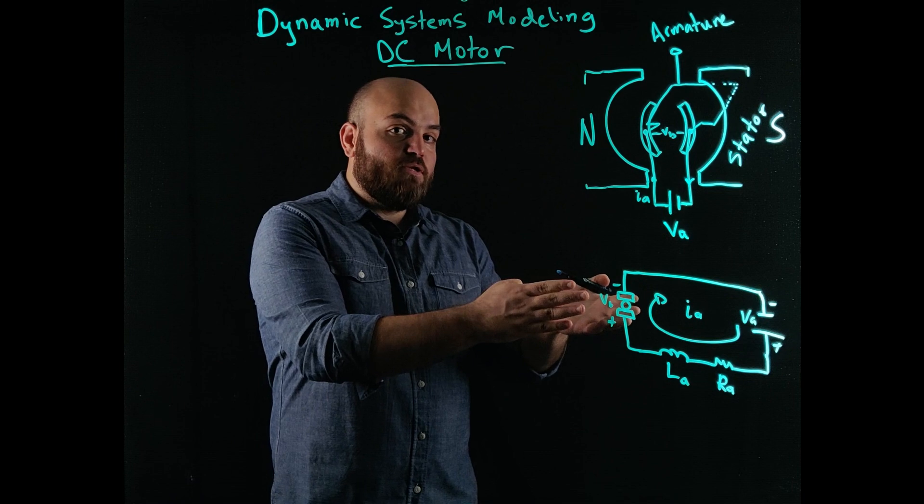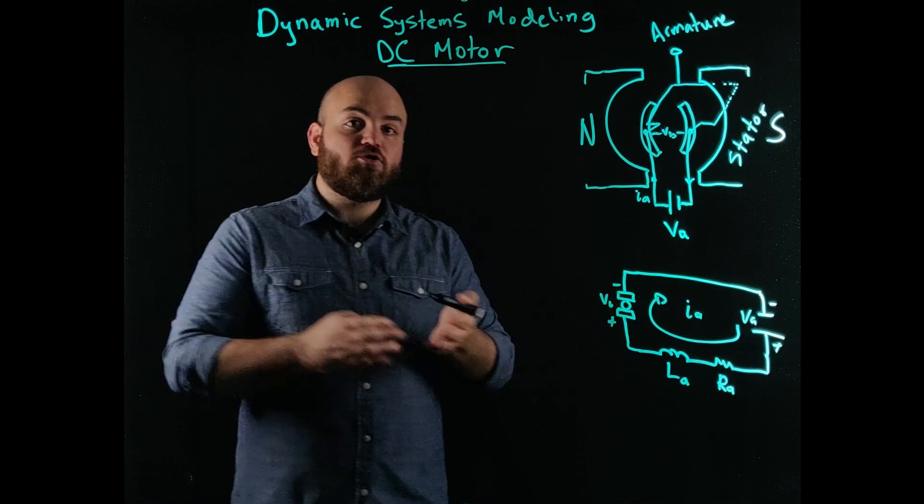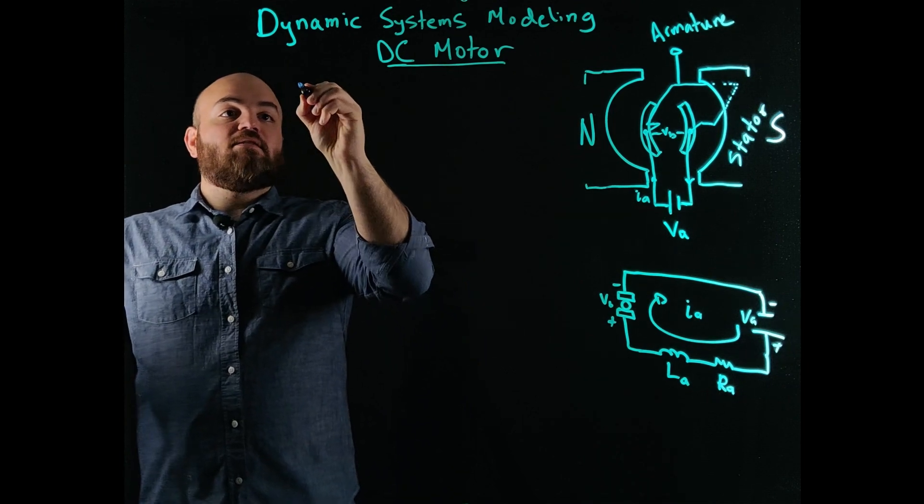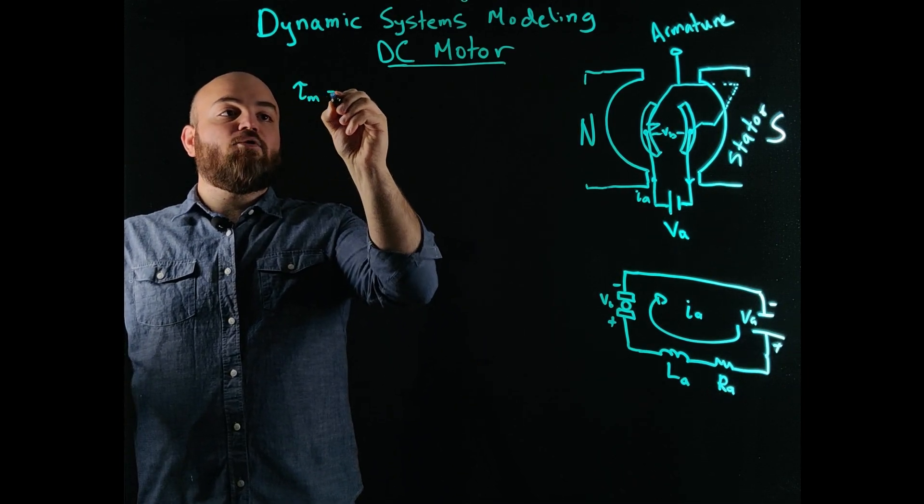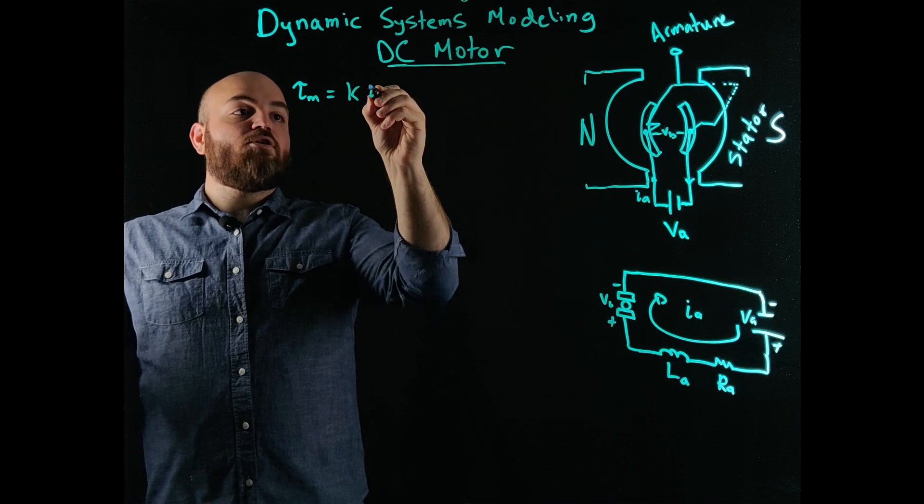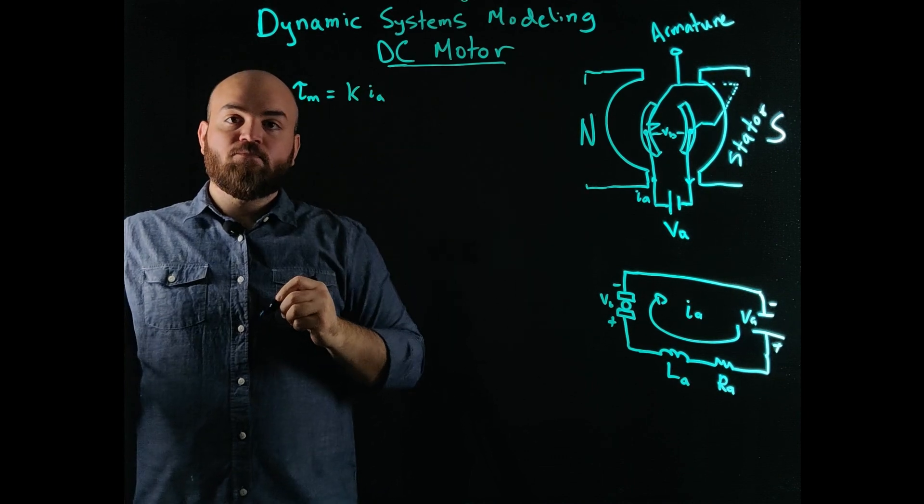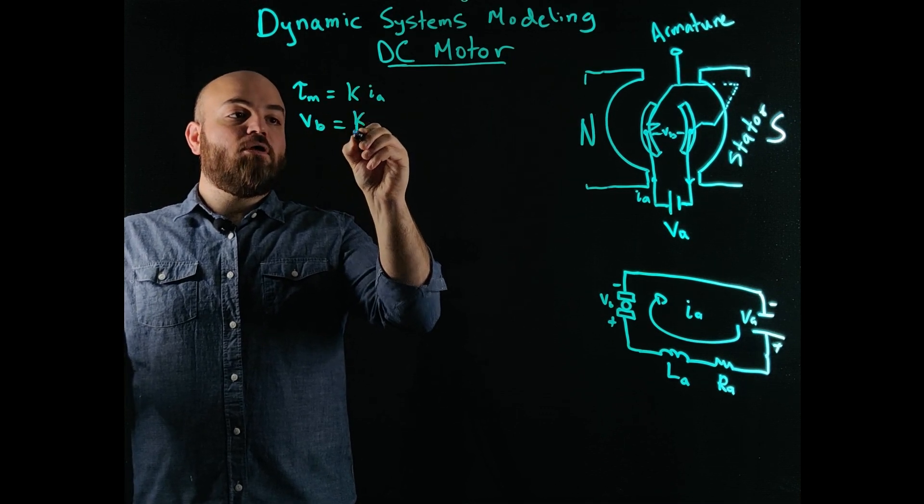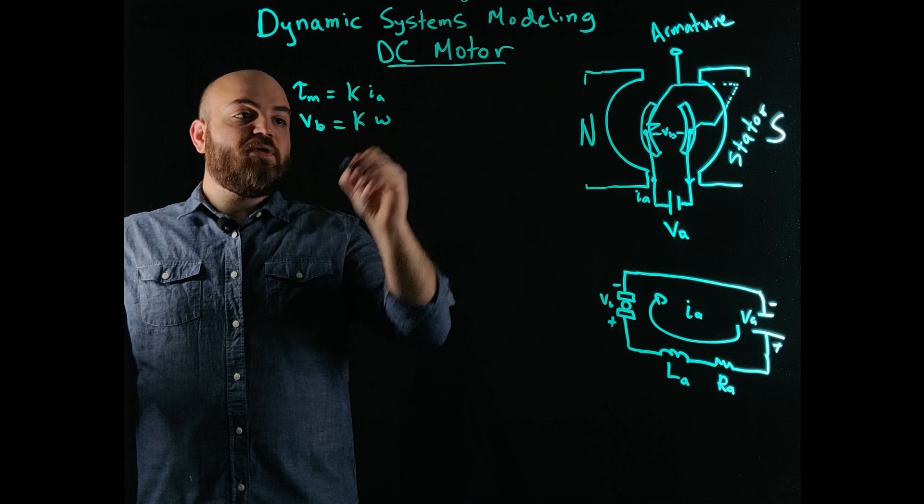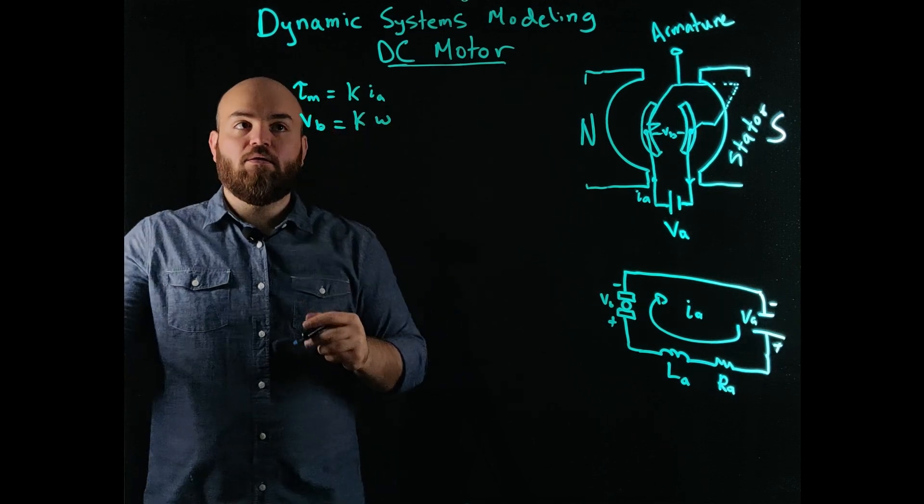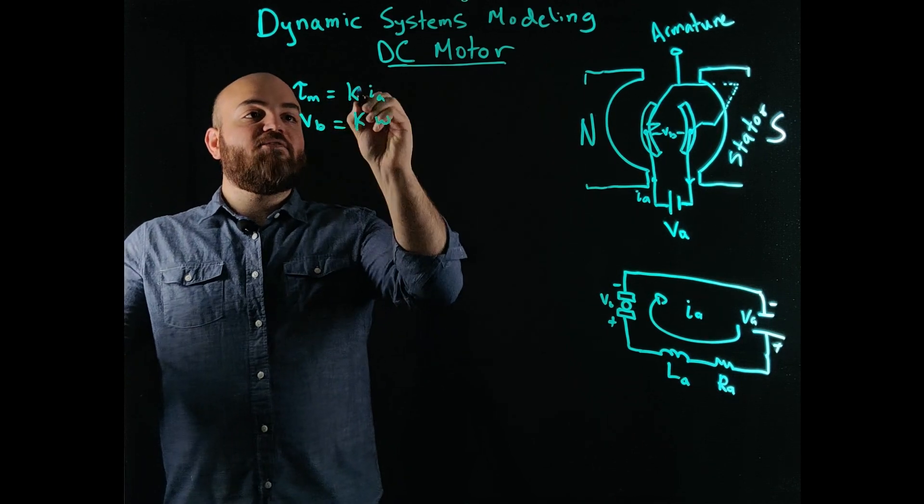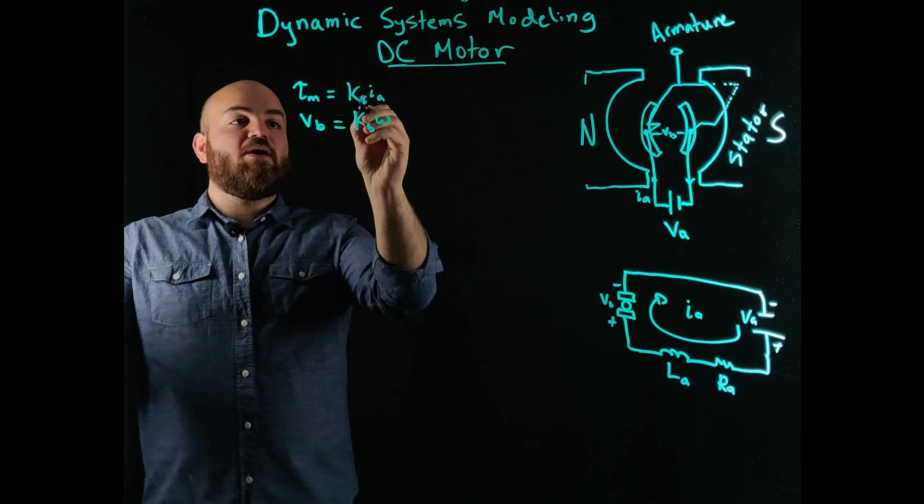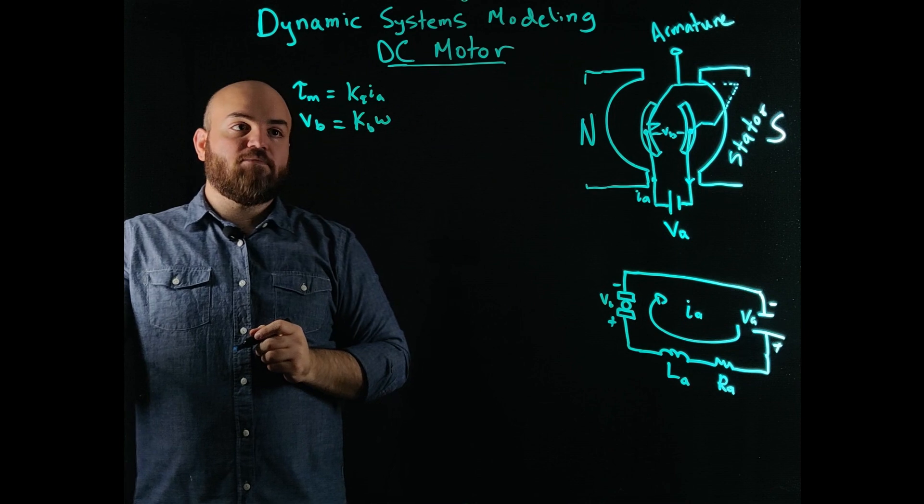As we used these idealized components, we can start to translate them into a little bit of mathematics. Now we know from physics that the torque generated in the motor is proportional to the current in the armature. We also know that the back EMF is proportional to the speed of the motor, which I'm going to call omega. This is rotational speed. And let's give those constants some subscripts so we can know that this is the back EMF and that's the torque constant.